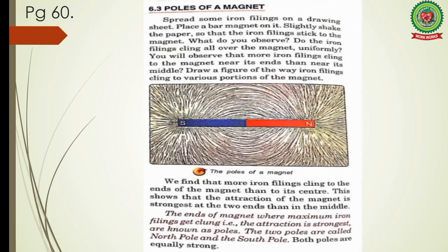Come to page 60. Let's read the topic: poles of a magnet. Spread some iron filings on a drawing sheet, place a bar magnet on it, and slightly shake the paper so that iron filings stick to the magnet. You will observe that more iron filings cling to the magnet near its ends than near its middle. Draw a figure of the way iron filings cling to various portions of the magnet. This shows that the attraction of the magnet is strongest at the two ends than in the middle.